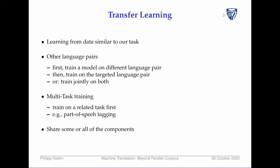Then there's multi-task training, which involves training on related tasks — for instance, part-of-speech tagging, question answering, or any kind of linguistic analysis. The idea is to share some components of models that are dedicated to a particular task or that could be shared across all tasks or language pairs.